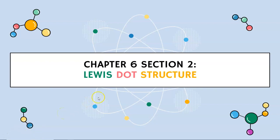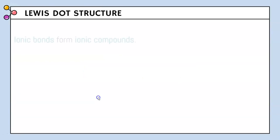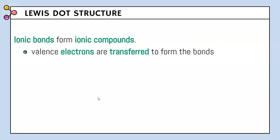Today we're going to be talking about Lewis Dot structures. Ionic bonds form ionic compounds because the valence electrons are transferred to form the bond. And because of that transfer of electrons, the bonds are not going to be visible in a compound.